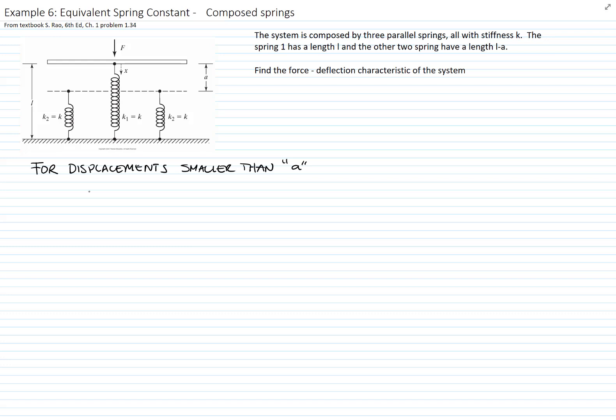If we do our free body diagram of this system for displacement smaller than a, the only force that opposes F will be the longer spring, which is k times x. So F equals kx.